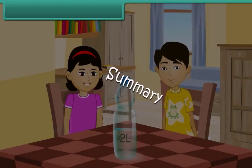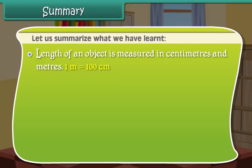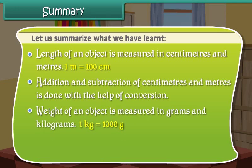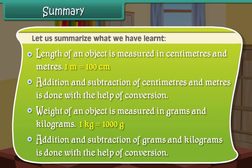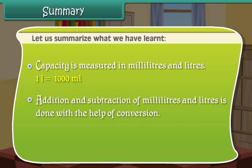Summary: Length of an object is measured in centimeters and meters; 1 meter is equal to 100 centimeters. Addition and subtraction of centimeters and meters is done with the help of conversion. Weight of an object is measured in grams and kilograms; 1 kg is equal to 1000 grams. Addition and subtraction of grams and kilograms is done with the help of conversion. Capacity is measured in milliliters and liters, and addition and subtraction of milliliters and liters is also done with the help of conversion.